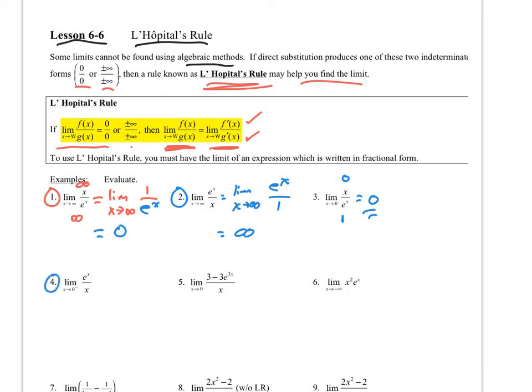Number 4: the limit as x approaches 0 from the left of e to the x over x. This gives 1 over 0 from the left, meaning 1 over a very, very small number, which is a very big number. But since it's from the left, it's going to be a very big negative number. So it's very different from number 2.